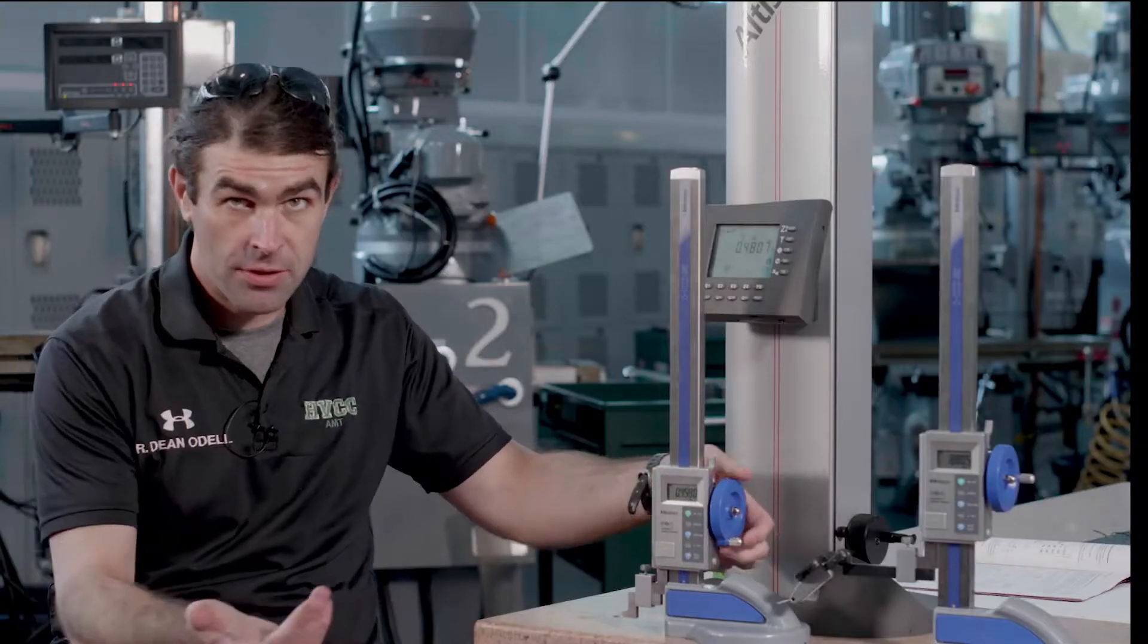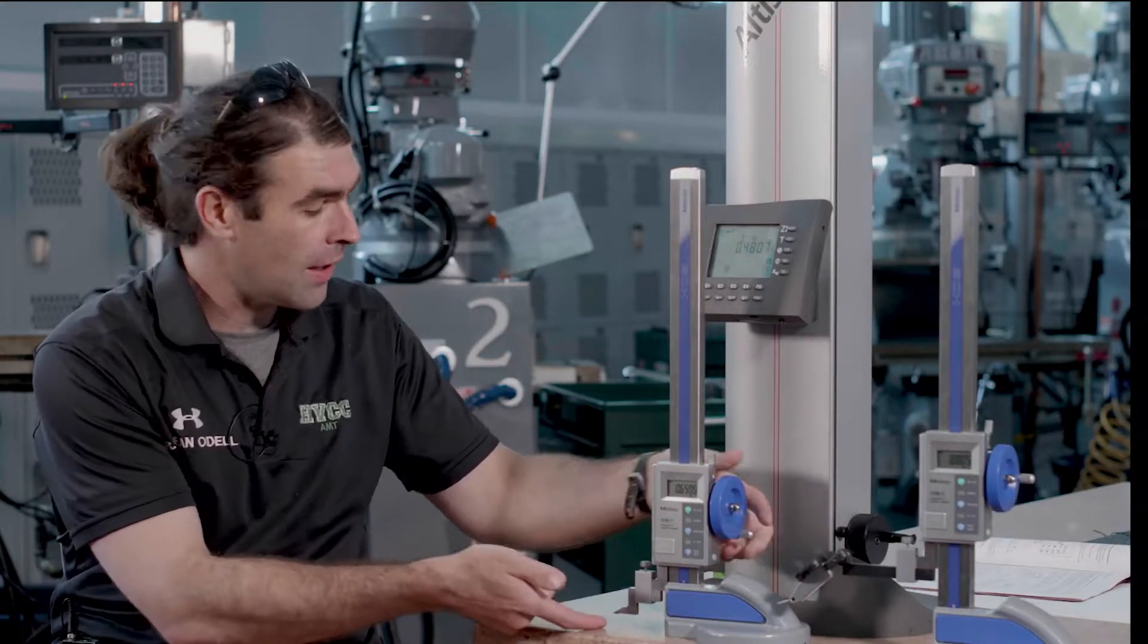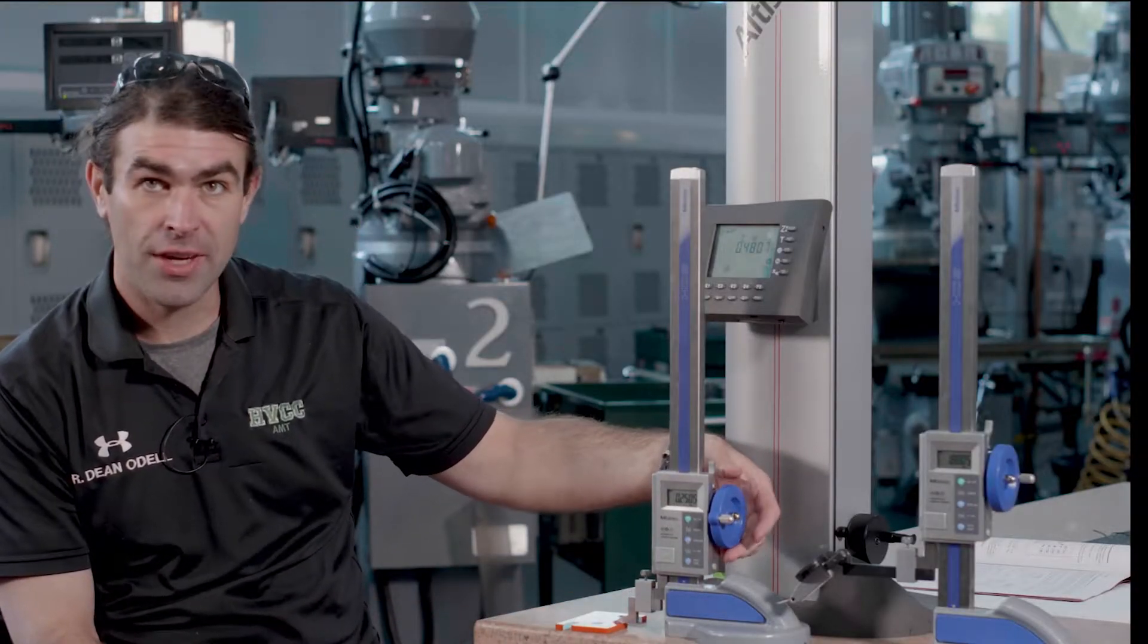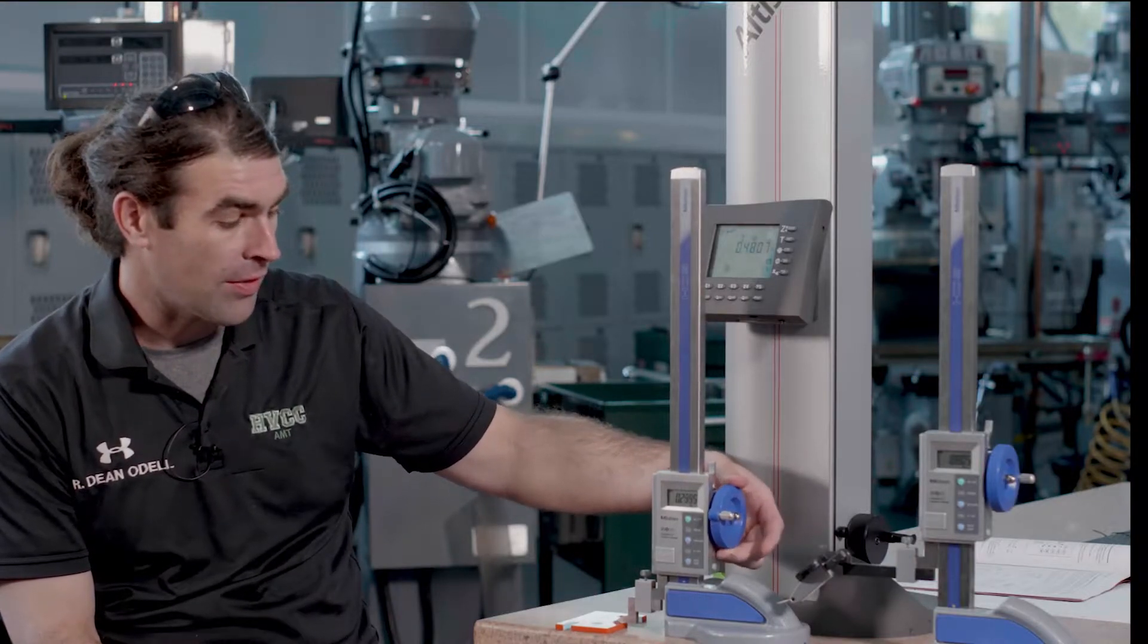You'd zero it on the table, and then you can measure the height of something. Now, the downside to this, and the reason you typically don't do it this way, is that you can vary the amount of force applied.